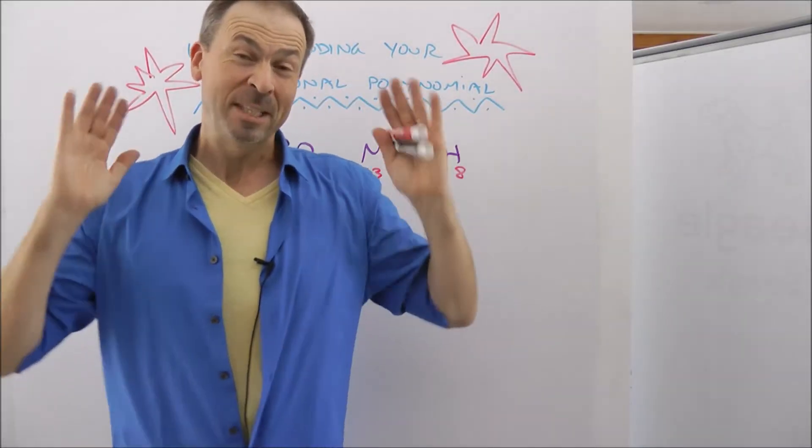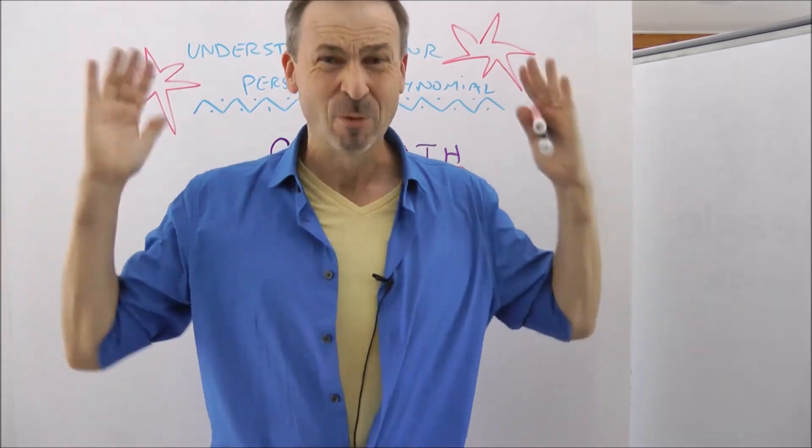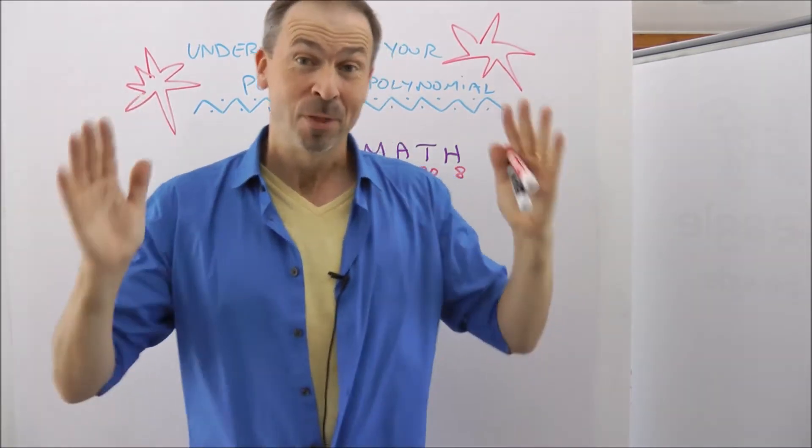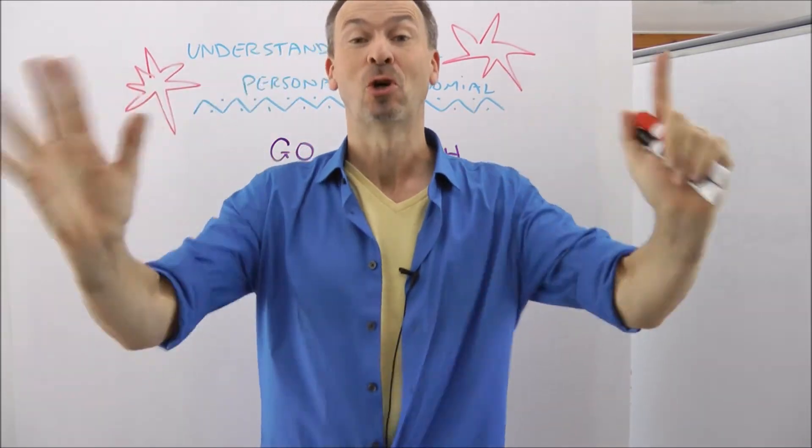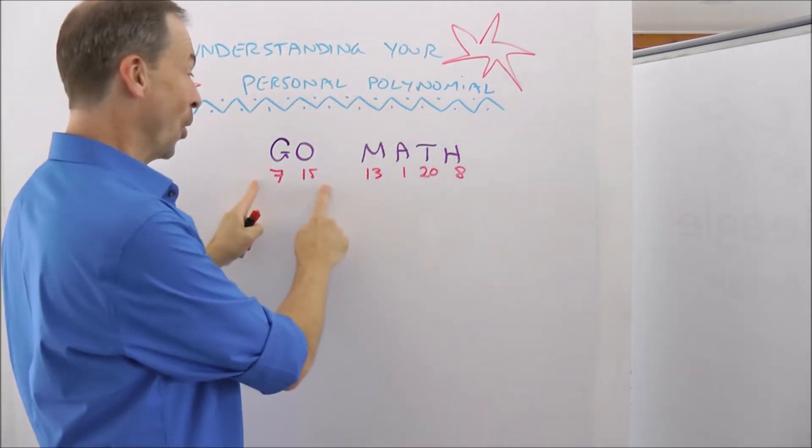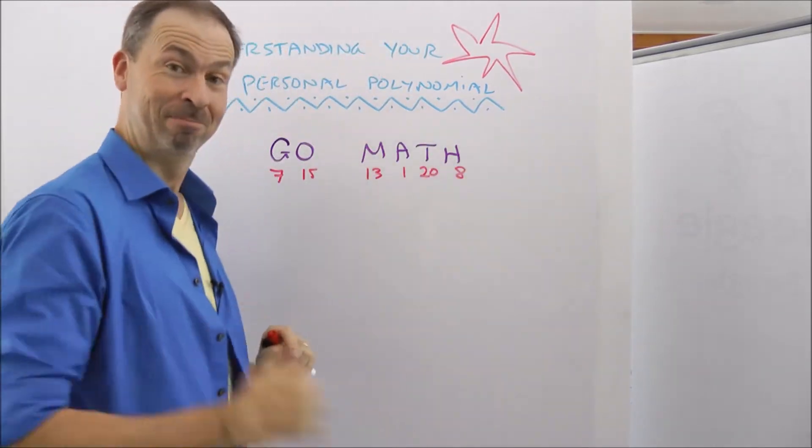G'day, it's James again. So what's the mathematics behind these personal polynomials? How do you write down a formula that spells your name? Well, the best way to explain it is just to do it. In fact, I'll do two examples with you. Let's spell GO and let's spell MATH for GO Math.